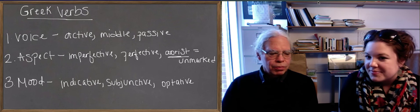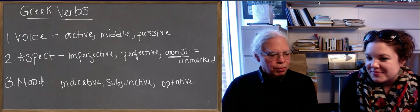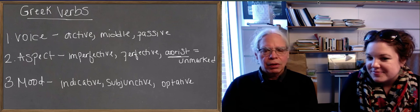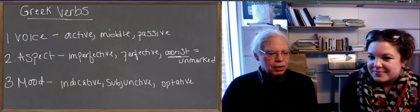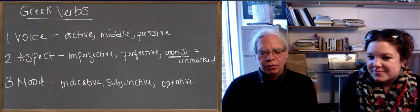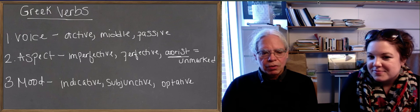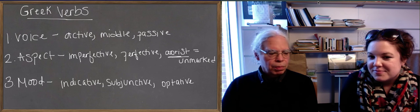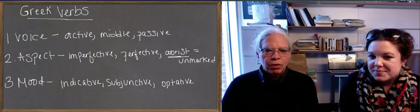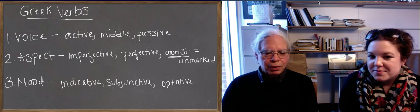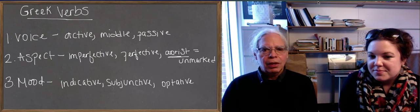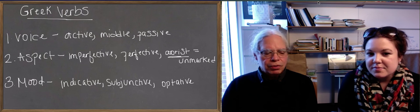But the other two, subjunctive and optative, attenuate the realness of your utterance. So in Greek, the subjunctive is what you want to be true or what you expect to be true. And the same is true of the optative, except in the case of the optative, it's less likely that they'll be true.